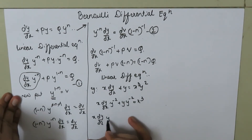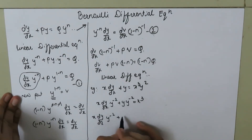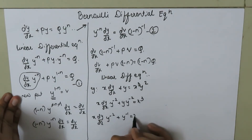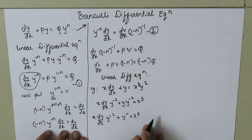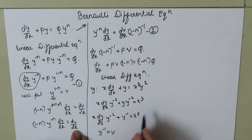This gives us x times dy/dx times y to the power negative 2 plus y to the power negative 1 equals x cubed. We now substitute y to the power negative 1 as v. Let this be equation number 2.